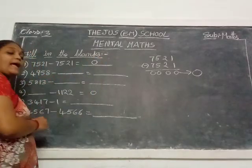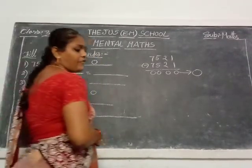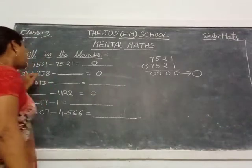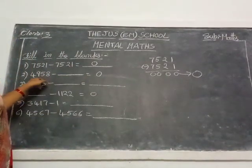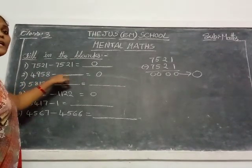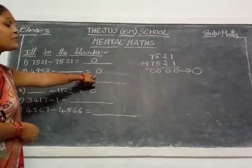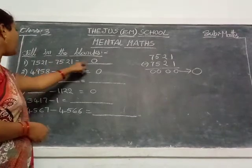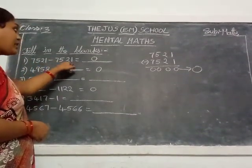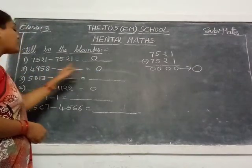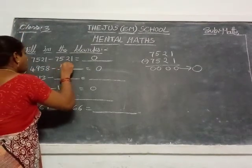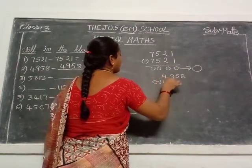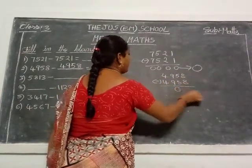So you write here, in this blank, 0. Next: 4958 minus dash is equal to 0. Same property here also. 4958 — which number do you subtract to get 0? So you write here the same number, 4958. Check: 4958 minus 4958 is 0, children. Yes.